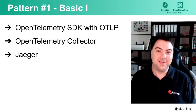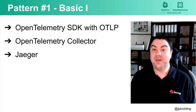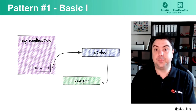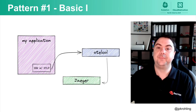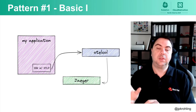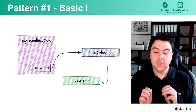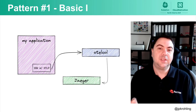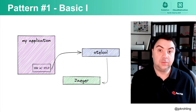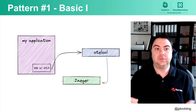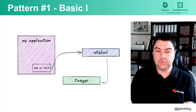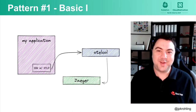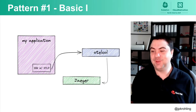The very first pattern is the basic pattern. We have our application instrumented using the OpenTelemetry SDK, exporting data with OTLP to an OpenTelemetry Collector. That collector then exports data to a final destination — in this case, Jaeger. Throughout this presentation, Jaeger is used as an example, but you can replace it with any tracing solution, specific vendor, or even something non-tracing like Prometheus.